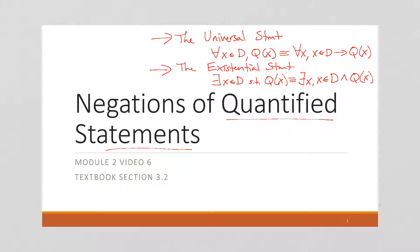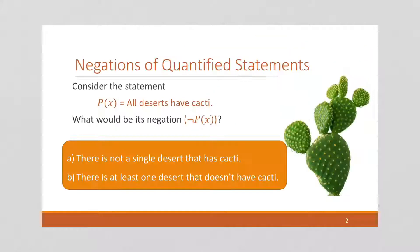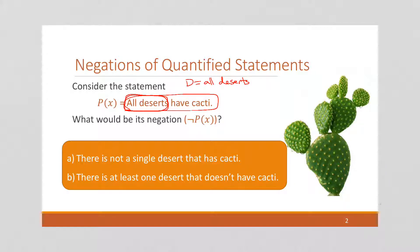We talked a little bit in the previous videos about their negations, but now we're going to formalize it. Here's a statement: All deserts have cacti. It's not a predicate — it is a statement because it is a universal statement. So our domain is all deserts, and we're saying that pick any desert and it's going to have cacti. So what would be the negation of this? This is in fact a false statement.